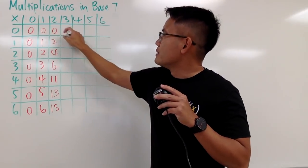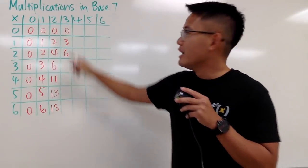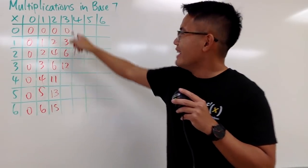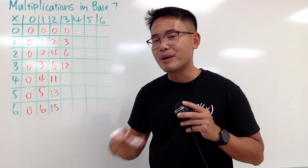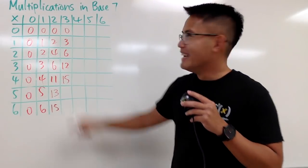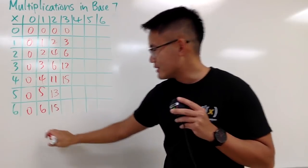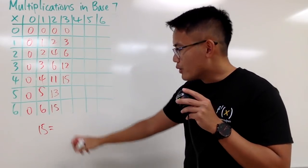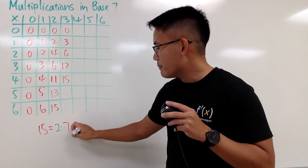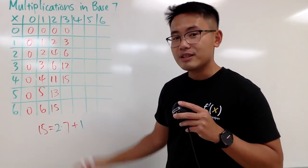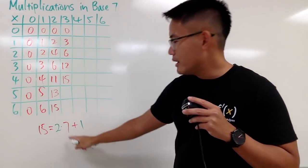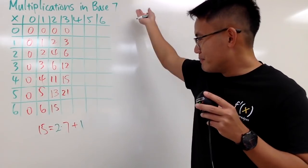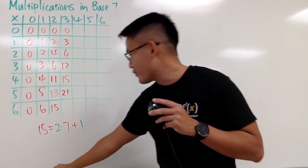Next, let's do 3 times 0, which is 0. 3 times 1 is 3, 3 times 2 is 6. So far so good. 3 times 3 is 9, but 9 is the same as 7 plus 2, so you write down 1, 2. Next, 3 times 4 is 12, but 12 is the same as 7 plus 5, so you write down 1, 5. 3 times 5 is 15, which is 2 times 7, which is 14, plus another 1. So look at 15 as 14 plus 1, and 14 is 2 right here, so you write down 2, 1 like this. 3 times 6 is 18, which is the same as 14 plus 4, so you write down 2, 4.